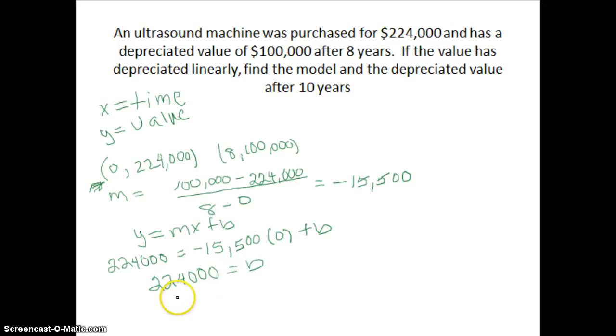Now I can write my equation. And so I have y equals negative 15,500x plus 224,000. And an equation is a model. So I've answered one part of the problem. I've found a model.